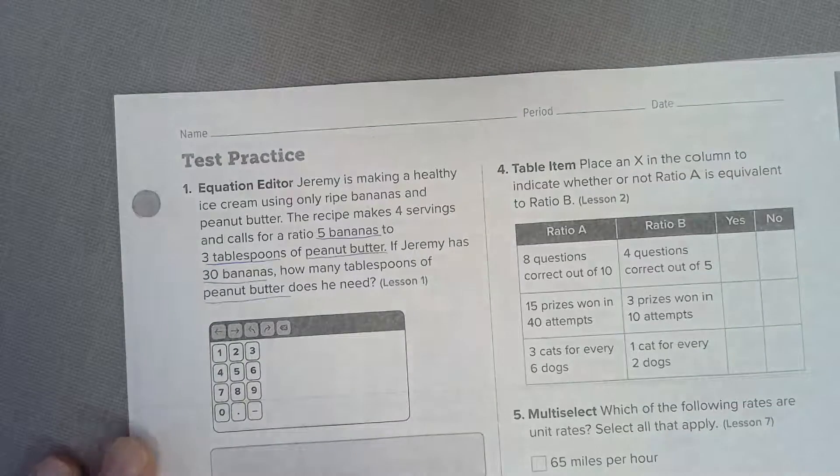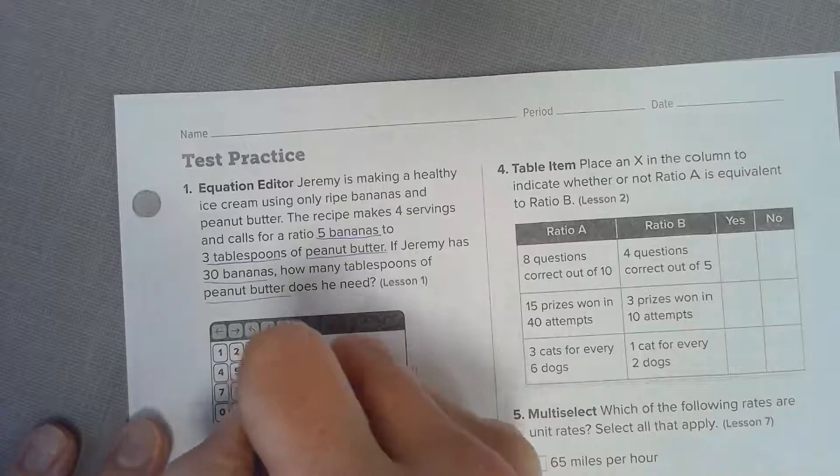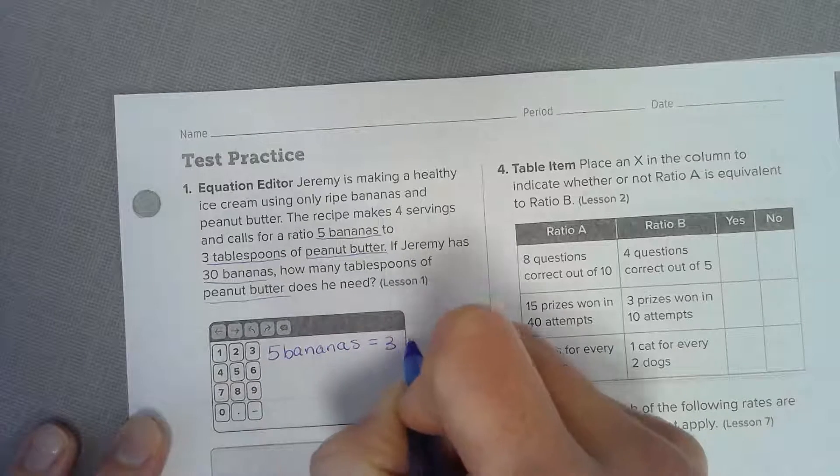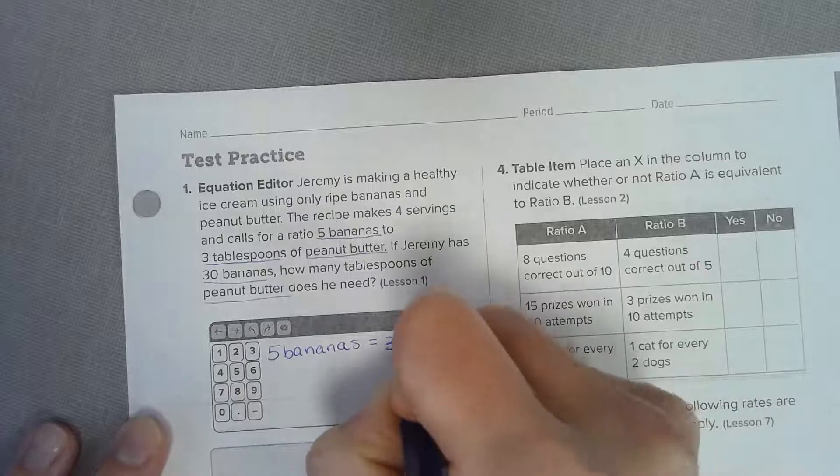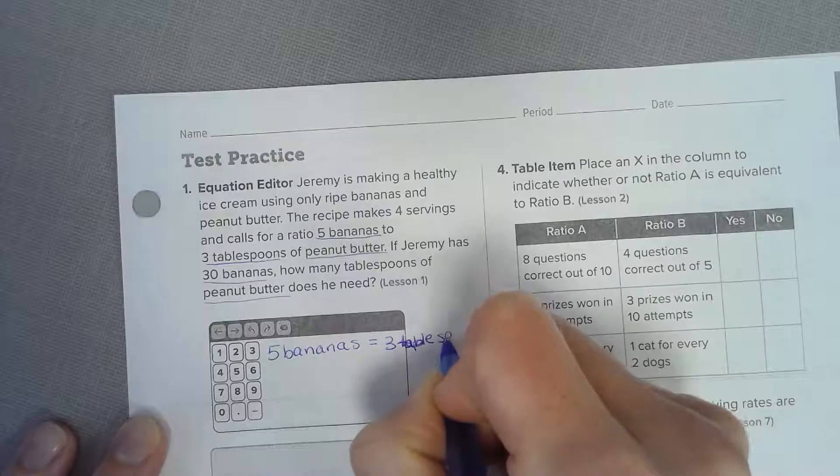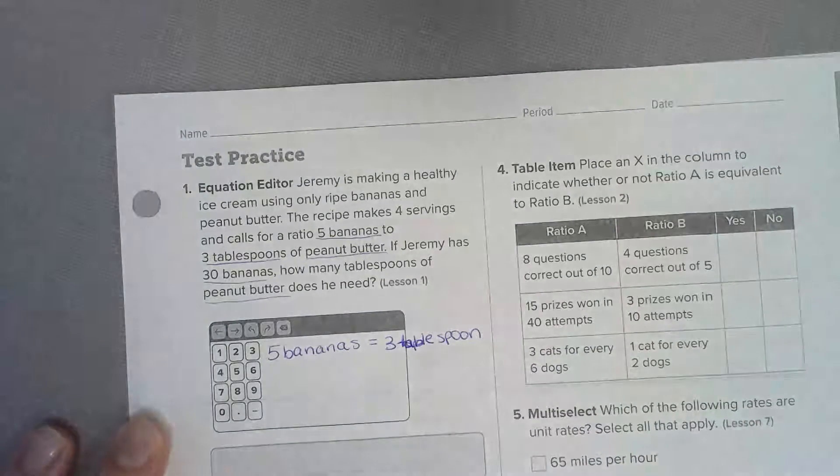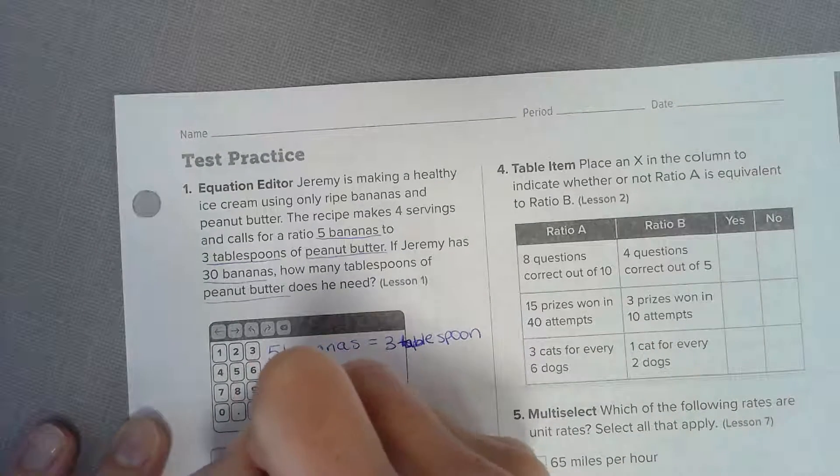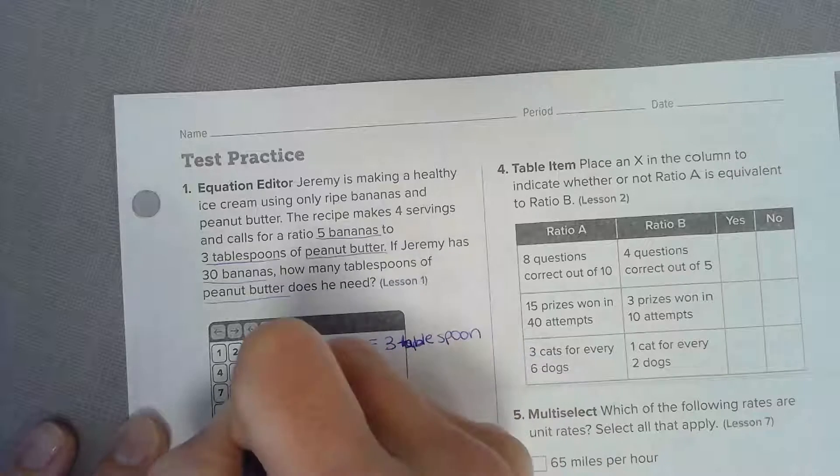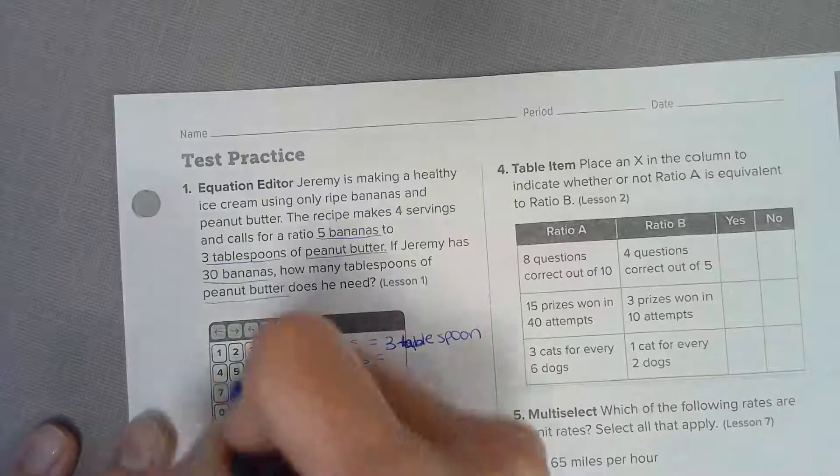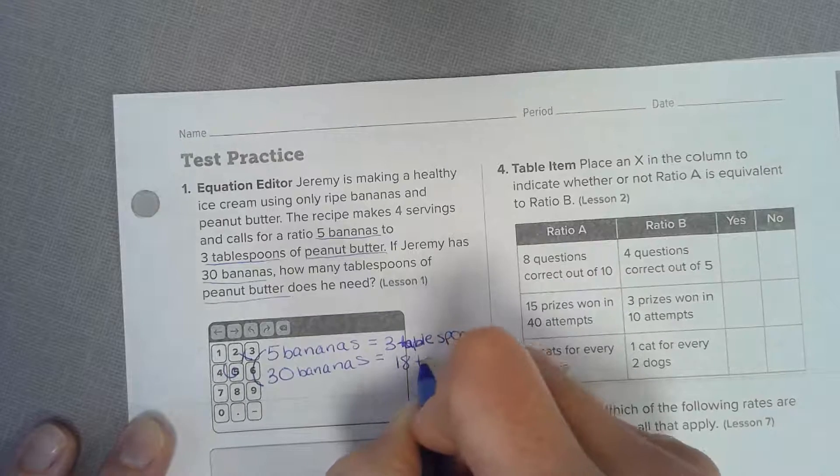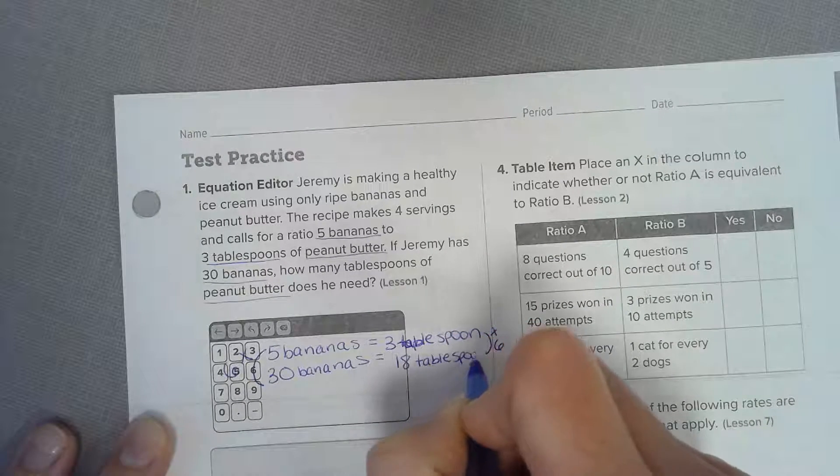Let's set up our equal ratios: five bananas to three tablespoons. He has 30 bananas, I'll put my 30 here. How do we go from 5 to 30? Times 6. So we need to do 3 times 6, so 18 tablespoons of peanut butter.